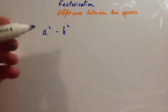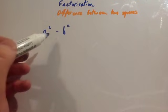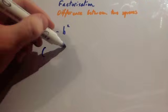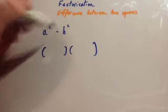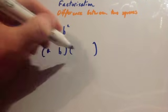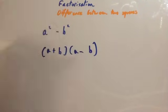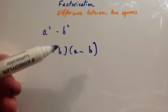If I was asked to factorize a² - b², again difference of two squares, squared and squared. You've got a and b, the square roots of them both a and b, one with a plus sign, one with a minus sign. And that's it. Difference between two squares factorized is (a + b)(a - b).